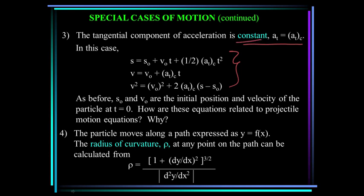If the particle moves along a path expressed as y as some function of x, the radius of curvature rho is defined by: the quantity (first derivative squared plus 1) raised to the 3/2 power, divided by the magnitude of the second derivative.